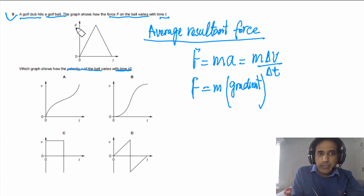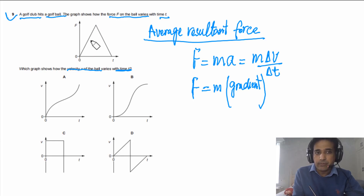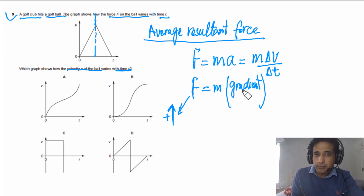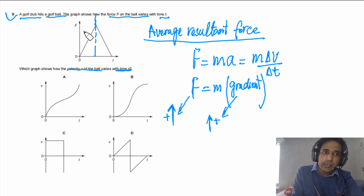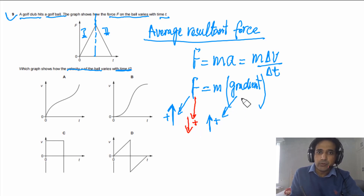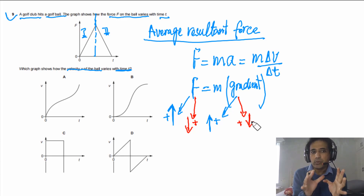We need to figure out how the gradient of the V-T graph changes. In the first part of the force-time graph, force is positive and increasing, so the gradient of the V-T graph must also be positive and increasing. In the second part, force is still positive but decreasing, so the gradient must be positive and decreasing. We now look for the graph that satisfies both conditions.